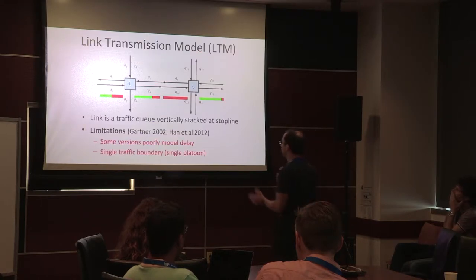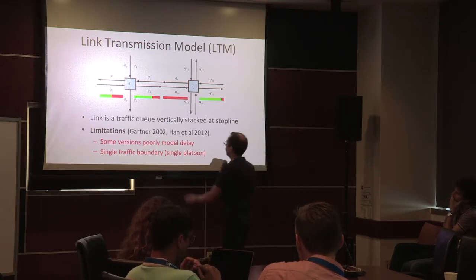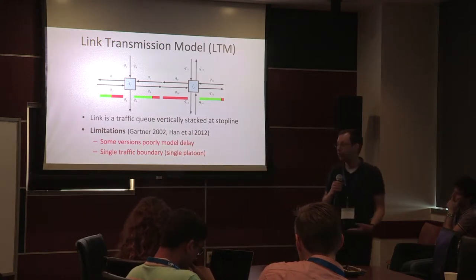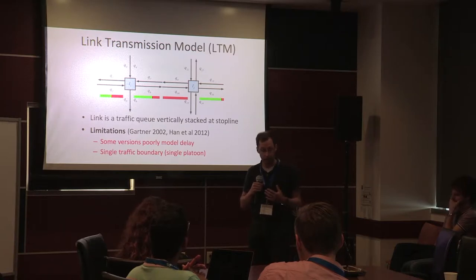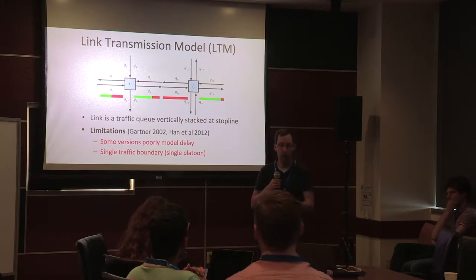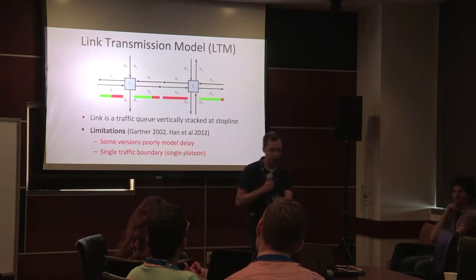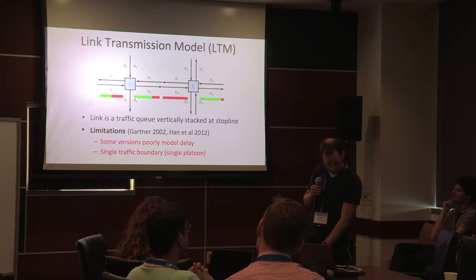In particular, for traffic signal control you want to handle platoons — groups of cars traveling together, limited by the slowest car in front. This platoon is coming down the road and you want them to go through, but you really can't model that well with the LTM, which basically says there's a high-density and low-density region with no knowledge of where the platoon is in the middle of the road. That's critical to good signal control.